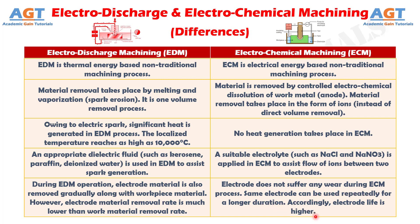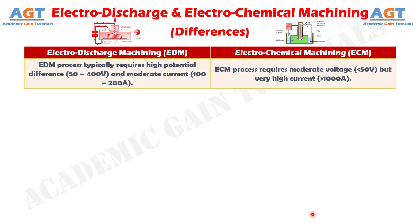Accordingly, electrode life is higher. Difference No. 6: Electro-Discharge Machining process typically requires a high potential difference of 50 to 400 volts and moderate current of 100 to 200 amperes, whereas Electro-Chemical Machining process requires moderate voltage of less than 50 volts but very high current greater than 1000 amperes.